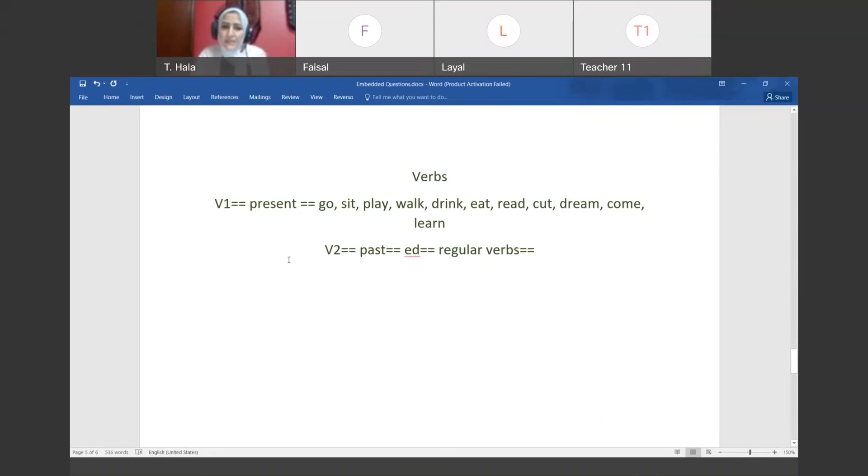When the verb is in any present state, the present. Let's take examples of the verb in the present. Give me examples. Go, say this, play, walk, drink, eat, read, cut, come, dream, learn, for example. All of these are verbs in verb one, the first form of the verb. When I want to convert these verbs to the past, I need to make them past. These verbs, I'm just saying this, I'm transferring them to verb two, the second form of the verb, which is in the case of the past.